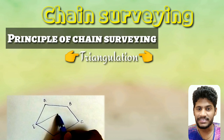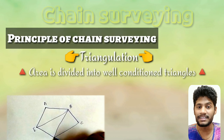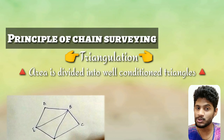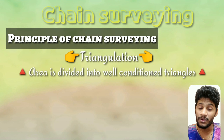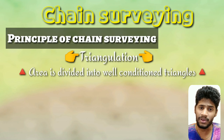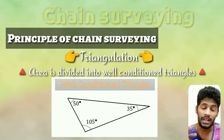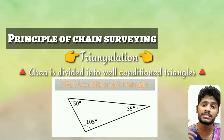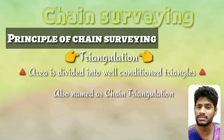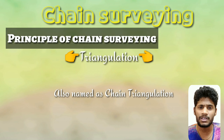Triangulation is the only way chain surveying works, and in triangulation, the triangles formed should be well-conditioned triangles. A well-conditioned triangle means any angle in the triangle should not be less than 30 degrees and should not exceed 120 degrees. Such triangles are called well-conditioned triangles, and chain surveying is also called chain triangulation.